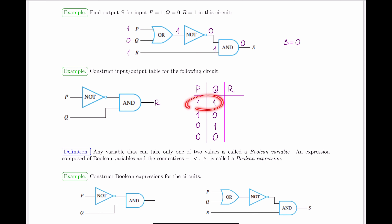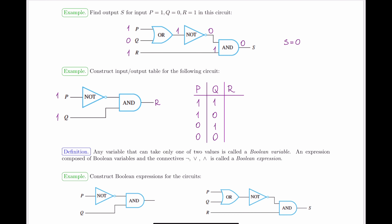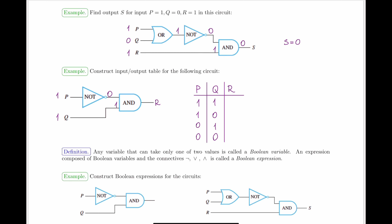For the first case, P equals one and Q equals one: the one goes through the NOT gate, giving zero on the exit. The AND gate then takes in zero and one — zero AND one is zero. So the output for input one-one is zero.